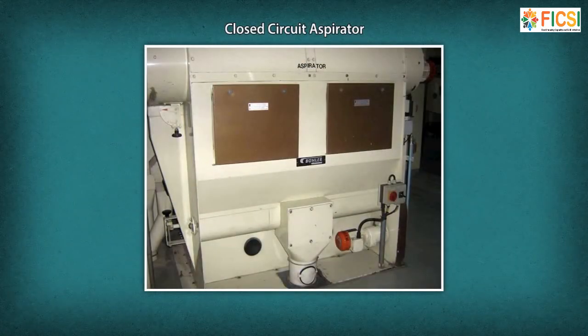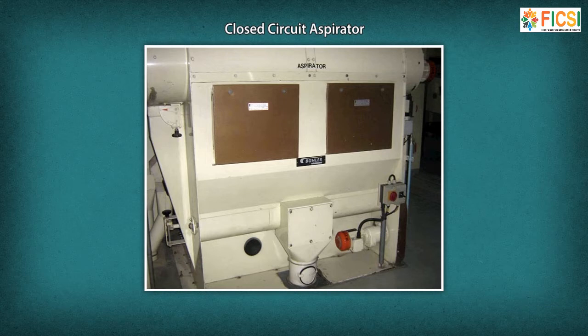Closed Circuit Aspirator: The closed circuit aspirator provides efficient, controlled separation of light impurities from cereals. Three inlet options enable a standalone application as well as compatibility with a milling separator or a sourcing machine. The closed circuit aspirator is either installed at the grain intake point or integrated into the serial cleaning system.